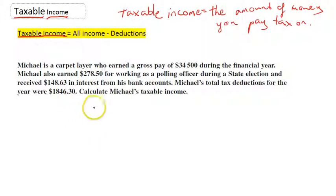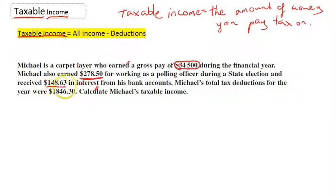Let's read this question here and circle any important information. Michael is a carpet layer who earned a gross pay of $34,500 during the financial year. Michael also earned $278.50 for working as a polling officer during a state election, and he also received $148.63 in interest from his bank accounts. Michael's total deductions for the year were $1,846.30. Calculate Michael's taxable income.